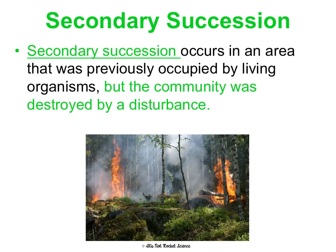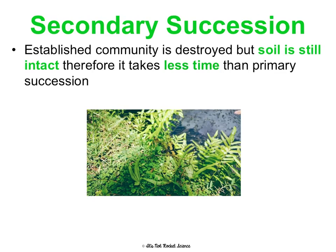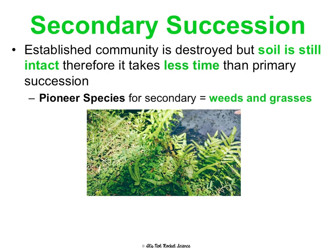Secondary succession is a little different. This occurs in an area that was once occupied by living things but was potentially destroyed by a disturbance, such as a forest fire, land being cleared for farming, a hurricane, any sort of natural disaster, or often something man-made. Once the established community is destroyed, soil is still intact, so it's going to take way less time than primary succession because you don't have to create soil.